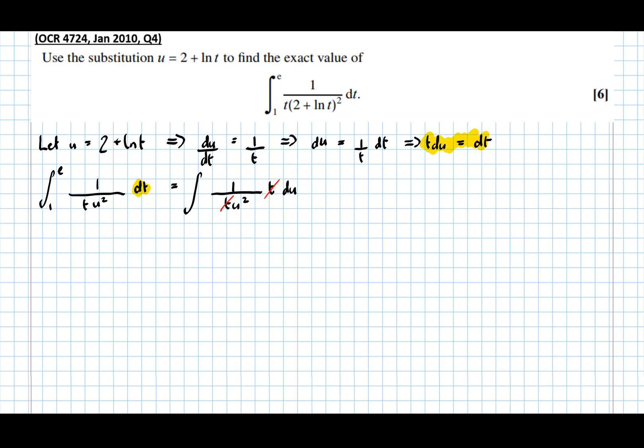Well, because u equals 2 plus ln t, we can find what the u limits are by simply subbing our t limits in. So t equals e, the first limit, which means that u equals 2 plus log of what t is, so log e equals 2 plus 1, which is 3.